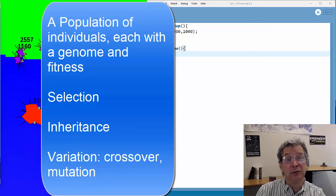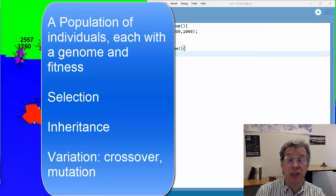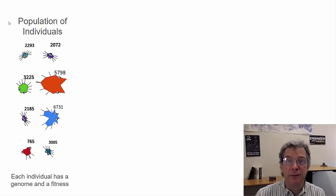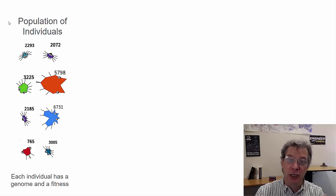One of the interesting things about these algorithms is they turn out to be fairly simple to code and can be applied to almost any optimization problem. Our algorithm begins with a population of individuals — it's helpful to think of these individuals as potential solutions, where each individual is a potential solution to whatever problem we're trying to solve.